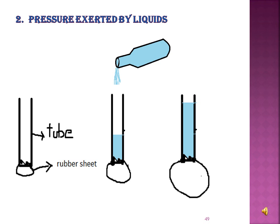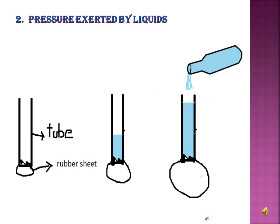Pressure exerted by liquids: take a transparent glass tube, stretch a rubber sheet tightly over one end and tie it. Hold the tube upright and pour some water — the rubber sheet bulges out. Pour more water — it bulges more. From this we can see that liquid exerts pressure on the bottom of the container, and it depends on the height of the liquid column. Pressure is directly proportional to the height of the liquid column.